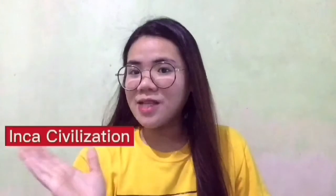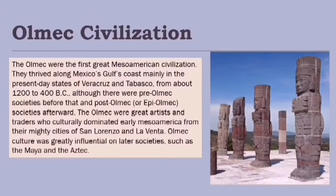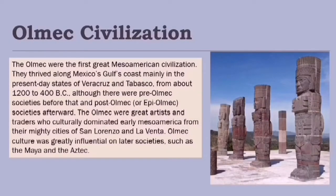Let's start with the Olmec civilization. The Olmecs were the first great Mesoamerican civilization. They thrived along Mexico's Gulf Coast, mainly in the present-day states of Veracruz and Tabasco, from about 1200 to 400 BC. The Olmec were great artists and traders who culturally dominated early Mesoamerica from their mighty cities of San Lorenzo and La Venta.